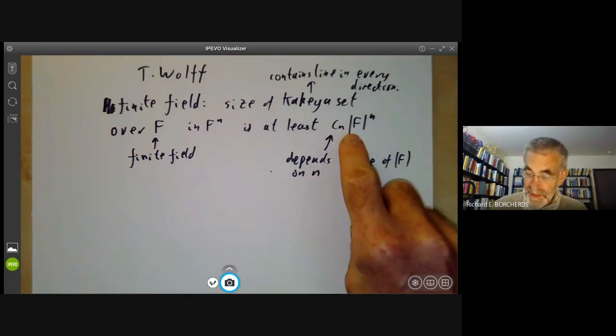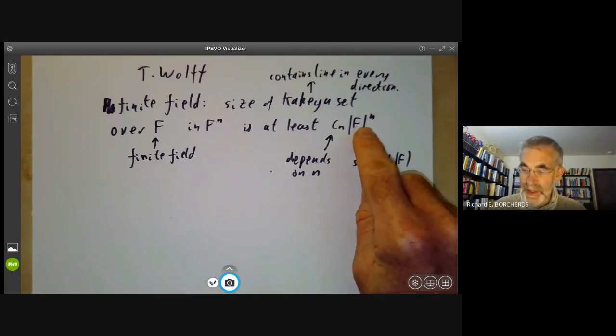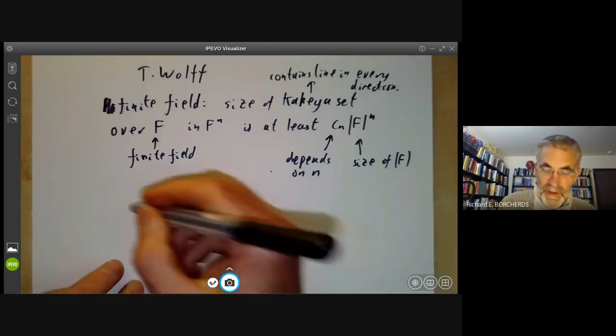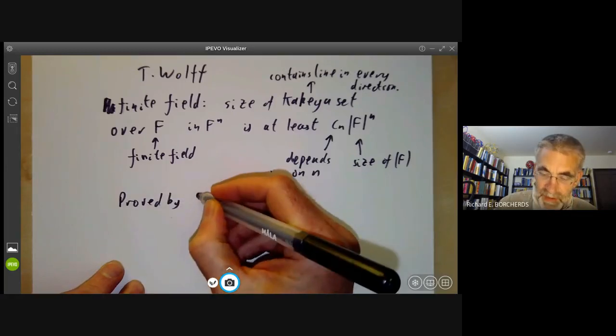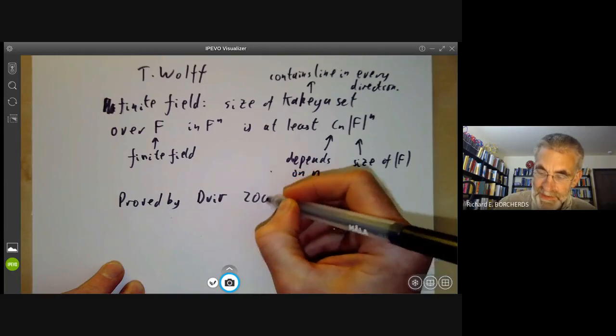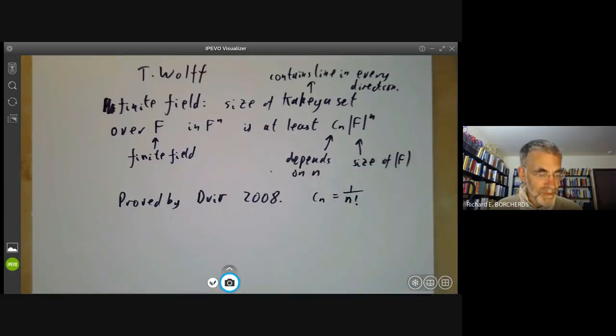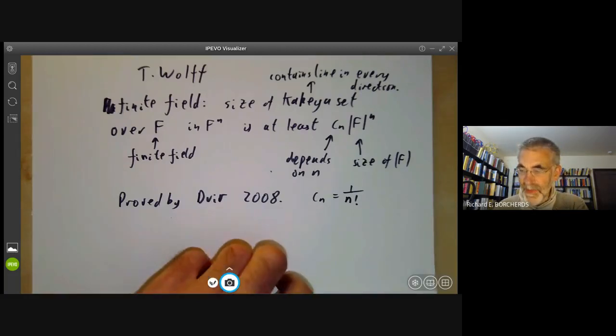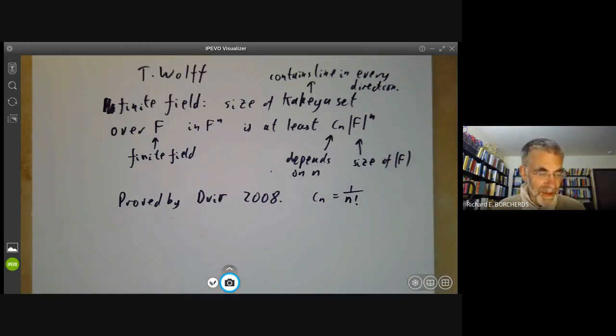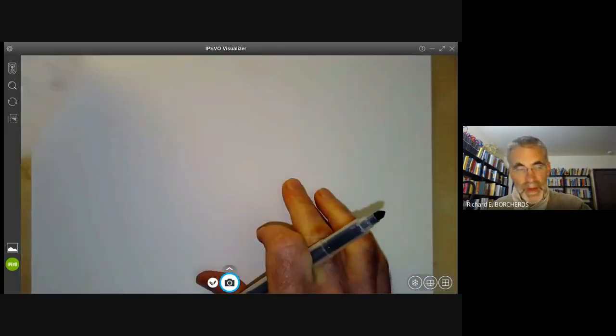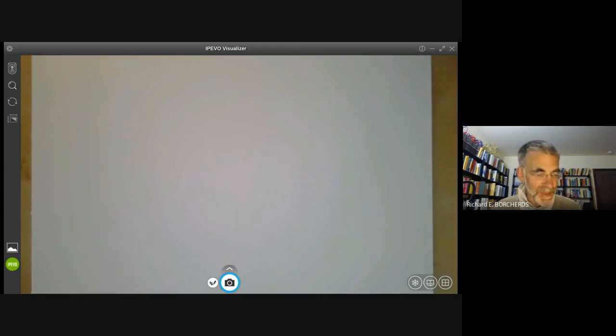And so Wolfe's conjecture said that Kakiya sets can't be too small. And this was proved by Devere in 2008. And he showed you could prove this with C_N being one over n factorial. And his proof was amazingly short for a problem that everybody thought was going to be rather difficult, so we'll describe his proof. It has two steps. Step one says that a Kakiya set cannot lie in a hypersurface of small degree. And step two says that if a set is small, we can find a hypersurface of small degree containing it.